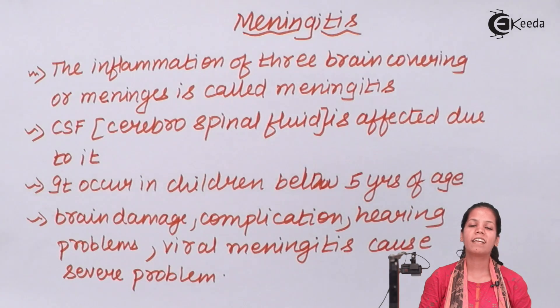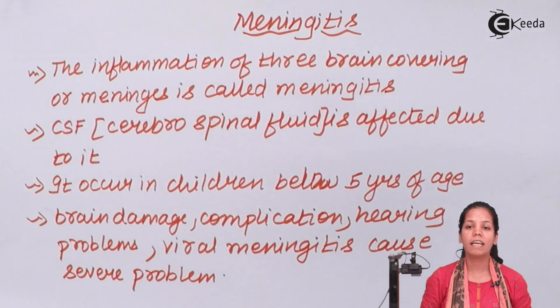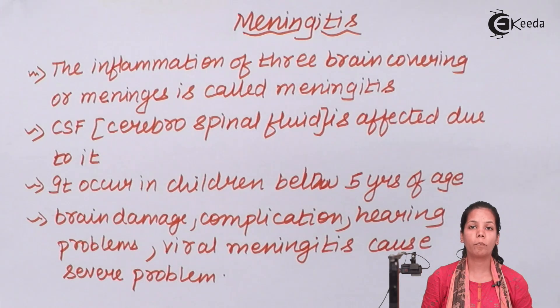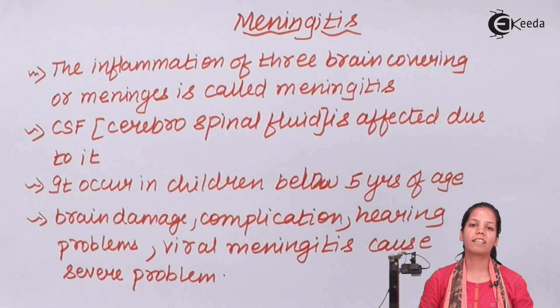So students, in this part of the chapter we came across meningitis — how meningitis is the inflammation of your brain tissues or dura matter, arachnoid matter, and pia matter. I hope students we are all very clear with this concept. Thank you.